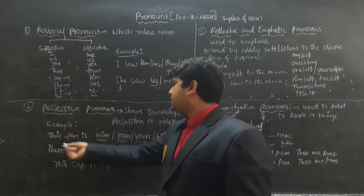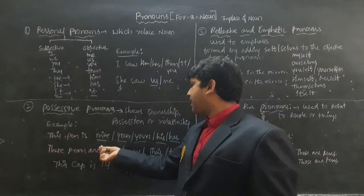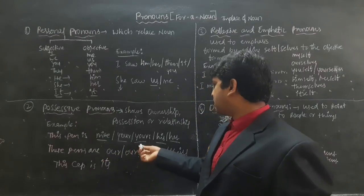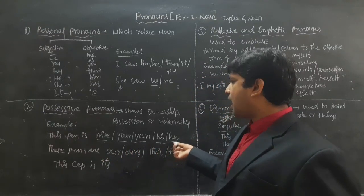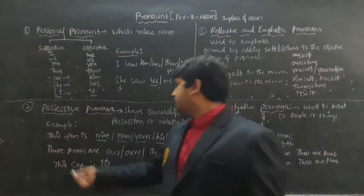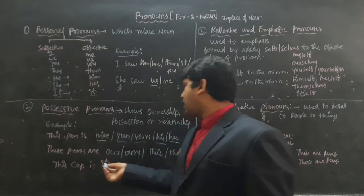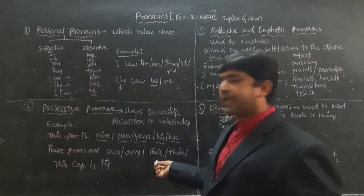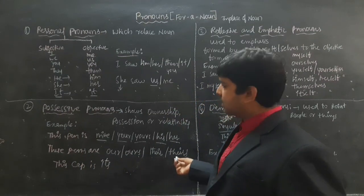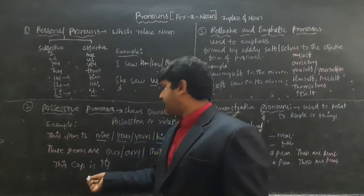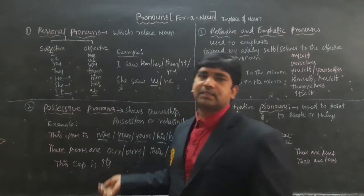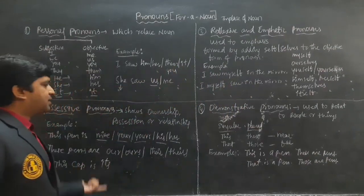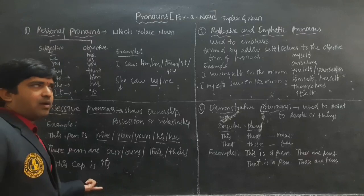See the examples: this pen is mine, your, yours, his, or her. These pens are our, are ours. They are theirs. This cap is its. In this way we use Possessive Pronouns.